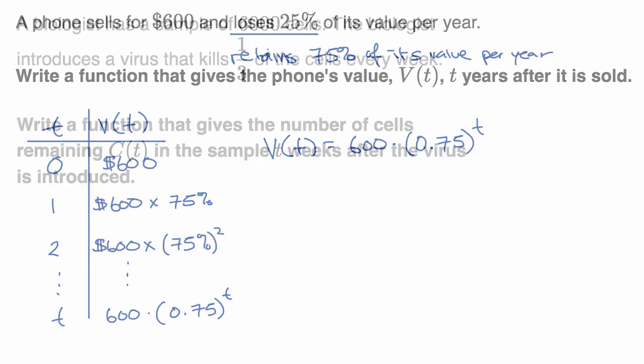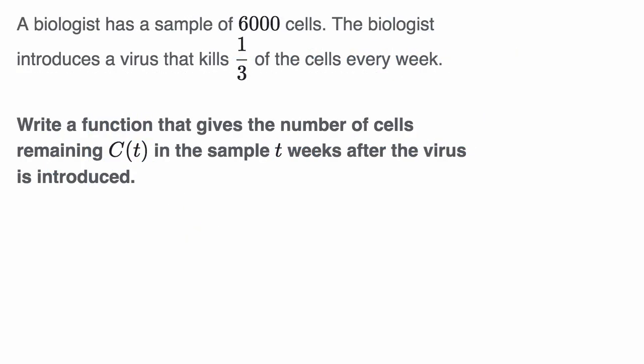Let's do another example. So here, we are told that a biologist has a sample of 6,000 cells. The biologist introduces a virus that kills one third of the cells every week. Write a function that gives the number of cells remaining, which would be C of T, the cells as a function of time, in the sample T weeks after the virus is introduced.